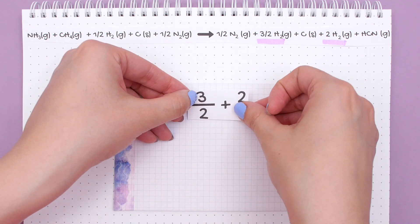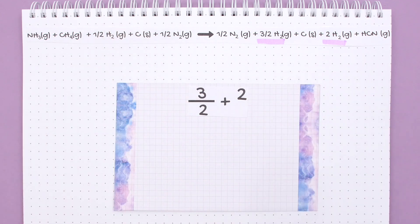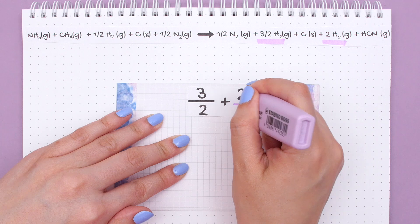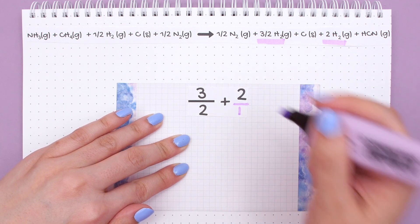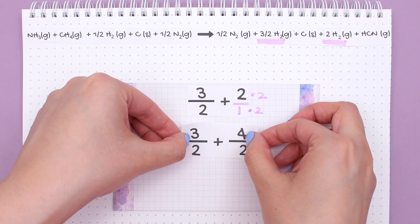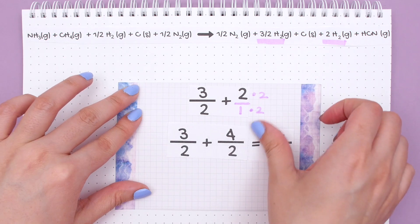We will add 3 halves and 2 together. When adding fractions, remember we need a common denominator which is 2. This 2 is actually divided by 1, so we will multiply the top and the bottom by 2. Next, add straight across and we get 7 halves.